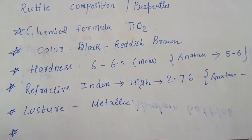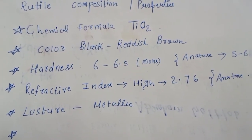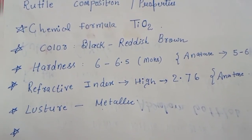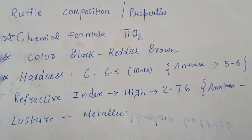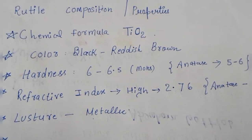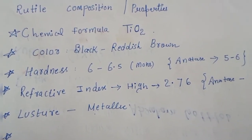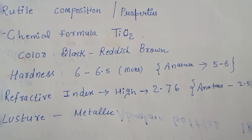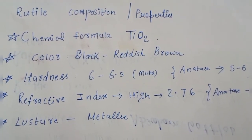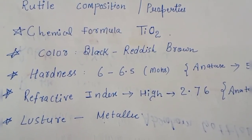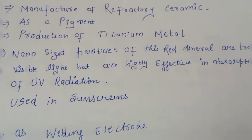The chemical formula is TiO₂. The color is black or reddish-brown. The hardness is 6 to 6.5 on the Mohs scale, compared to anatase which is 5 to 6. The refractive index is very high at 2.76, while anatase has a value of 2.55. The luster is metallic. Due to its high refractive index, rutile is widely used in optical fibers.